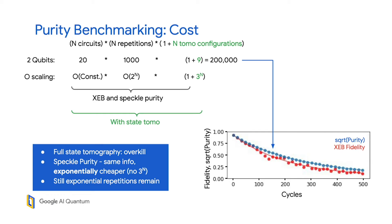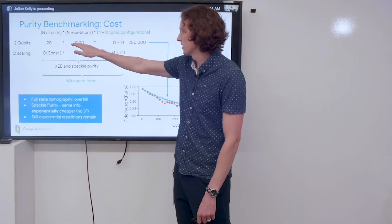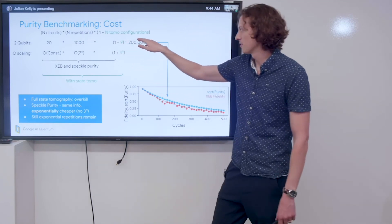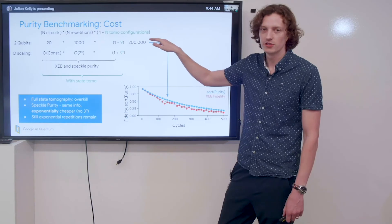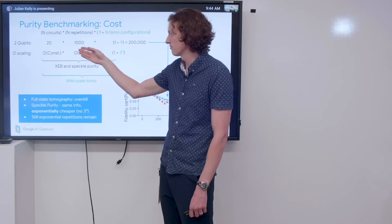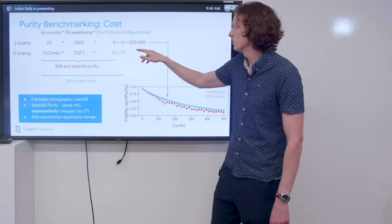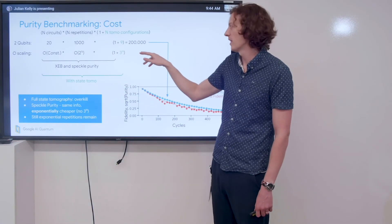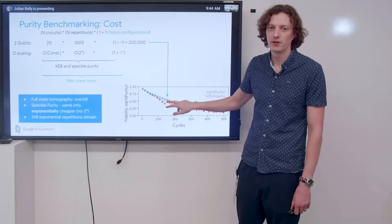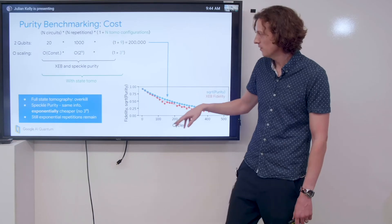Let's talk about how to understand the cost of these different ways of extracting purity in terms of experimental time. Typically, when we're doing an XEB experiment, we take n random circuits times n repetitions per circuit, and we may optionally add some number of additional tomography configurations to figure out how much data we need to take. For example, in two qubits, we may take 20 random circuits, 1,000 repetitions per circuit, and for two qubits we have to add an additional 9 tomography repetitions. That means we're taking 200,000 data points to extract a single data point here, which is pretty expensive.